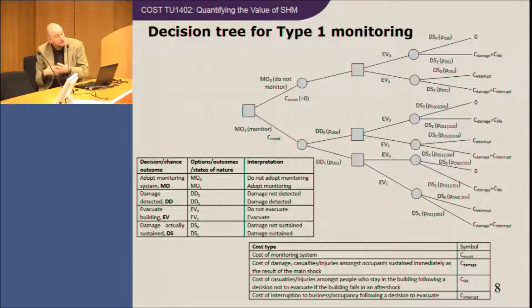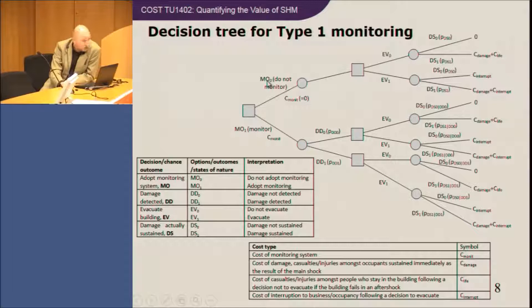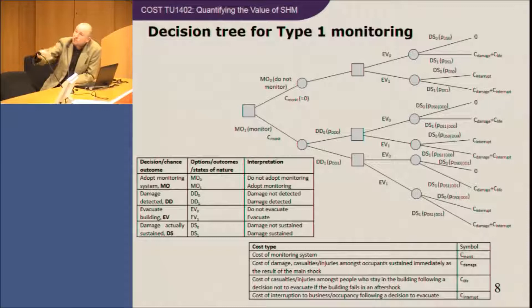You start with the decision to either do nothing, which doesn't cost anything, or to monitor, which immediately incurs some cost. This is a very simplified decision tree with only two branches at each node. In practice, you will have many more decisions, as monitoring could involve several options with associated costs and so on.